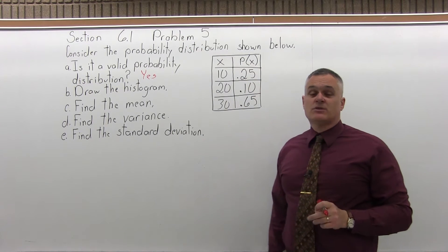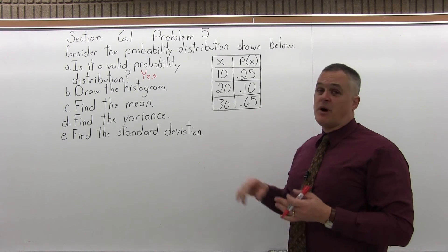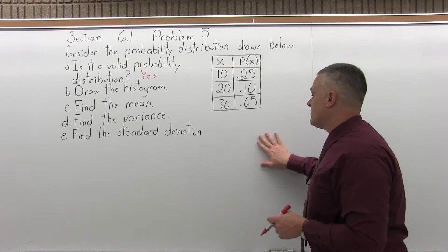B, draw the histogram. So in other words, the bar graph that would go with this probability distribution. So the bars have to be vertical. They have to touch for it to be a histogram. So let's see if I can fit it right below.